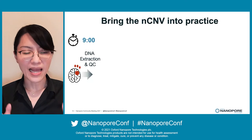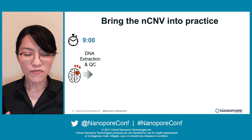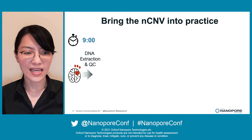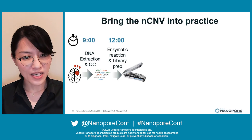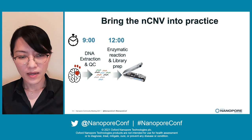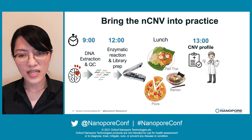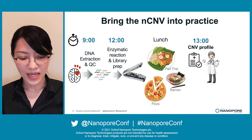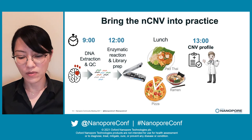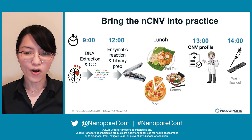To summarize the practical workflow: if we start at 9 a.m., we do DNA extraction and QC, then enzymatic reaction and library preparation until noon, then load onto the flow cell and go for lunch. We come back at 1 p.m. and submit the CNV profile to the clinician — completing the entire protocol within a single working day.